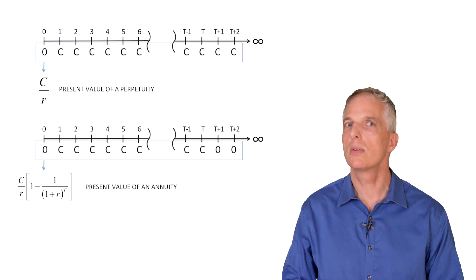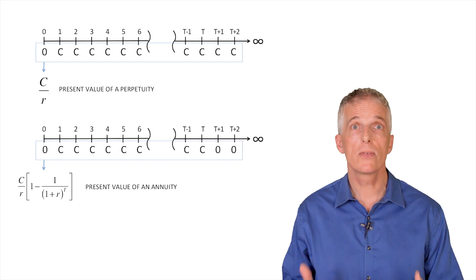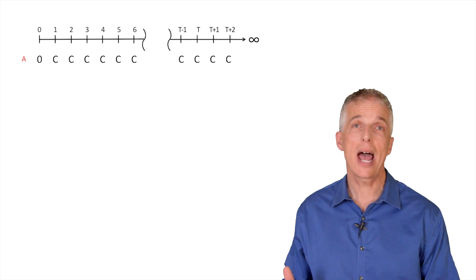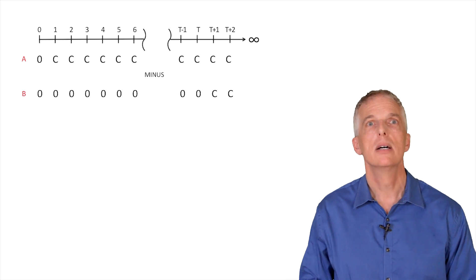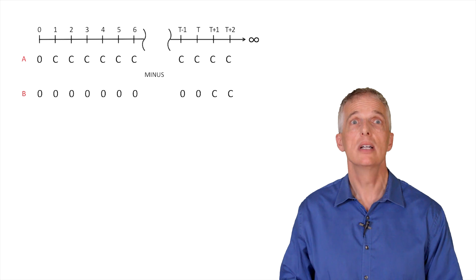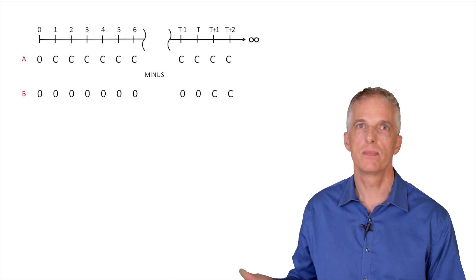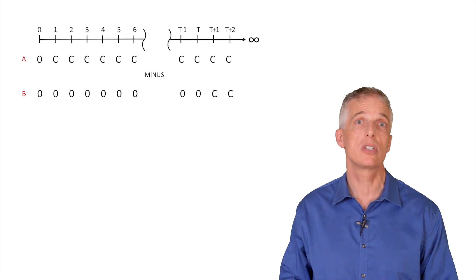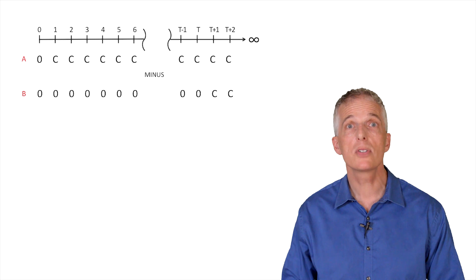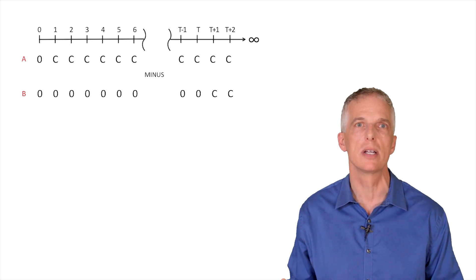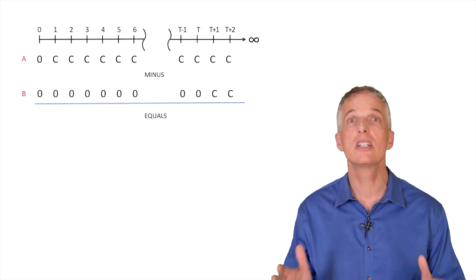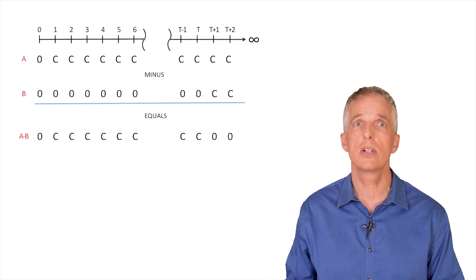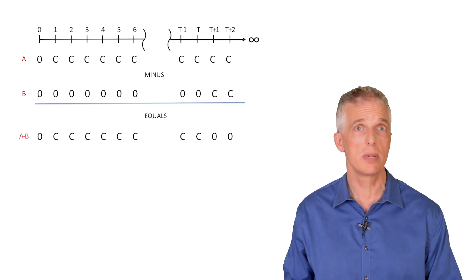To see this, let's engage in the following thought experiment. Let's start with a perpetuity where the first cash payment occurs one year from today — we will label this perpetuity A on the board. We are now going to subtract the cash flows associated with a second perpetuity B, but the second perpetuity does not begin paying the promised cash flow C until year T plus one, as depicted on this timeline. You can think of this as entering one contract A, where you buy the right to receive a constant cash payment forever beginning next year, and a second contract B, where you promise to pay a constant cash payment C forever beginning in year T plus one.